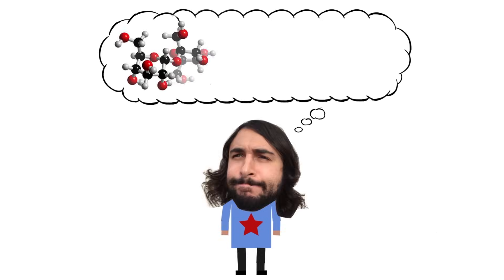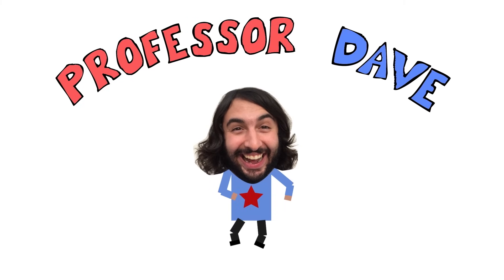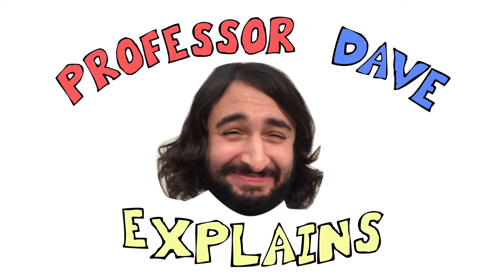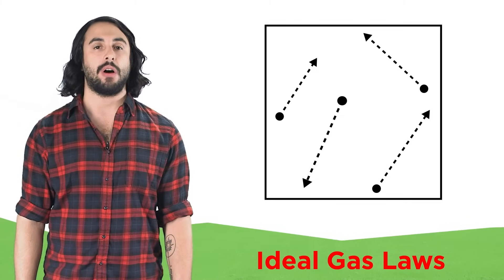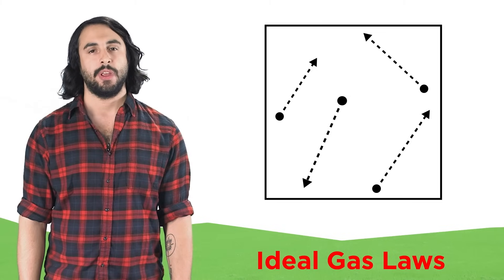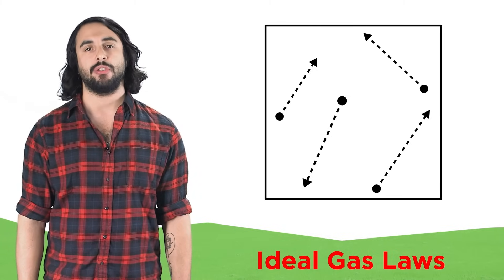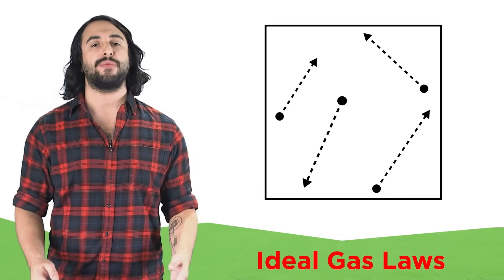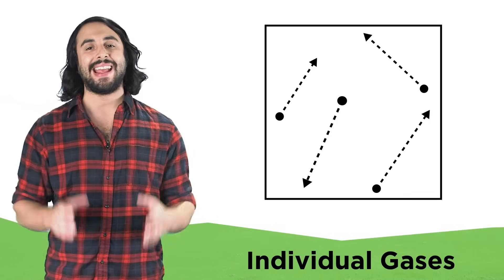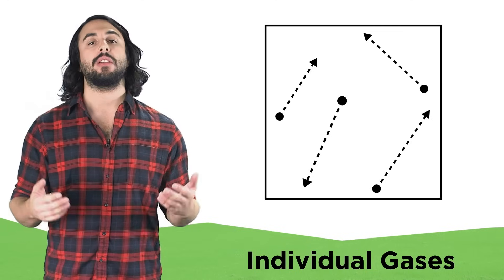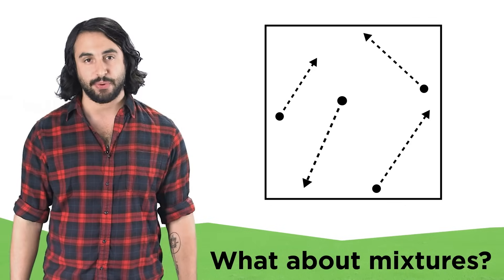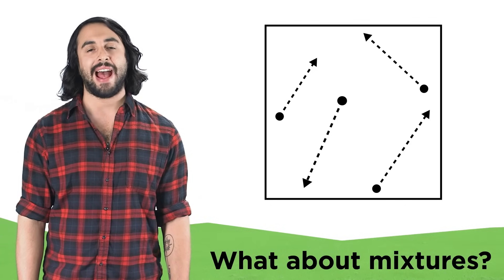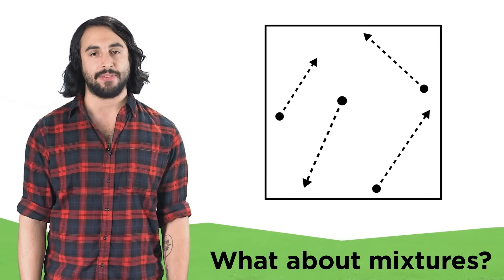Professor Dave here. Let's talk about Dalton's law. We've learned a lot about ideal gases and some of the laws that describe their behavior. But up until now, we have been examining the relationships between the variables that pertain to an individual sample of gas. But a lot of samples of gas involve mixtures of different substances, so we will want to learn about how these gaseous mixtures behave as well.